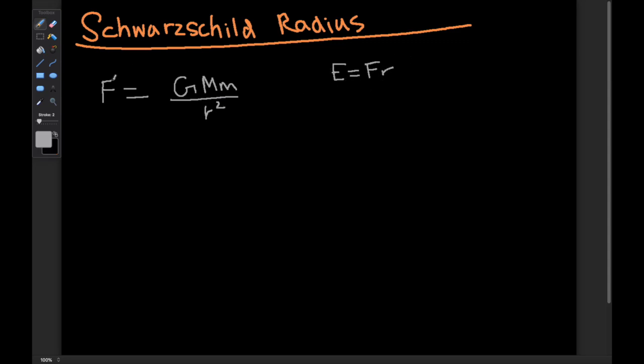So using this, I'm going to multiply both sides by R. So now we'll have Fr is equal to GMm over R. So Fr we know is energy.